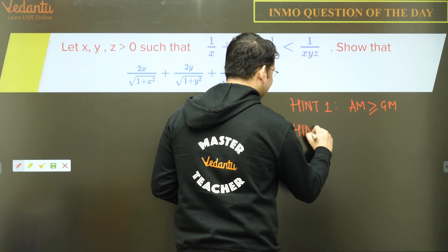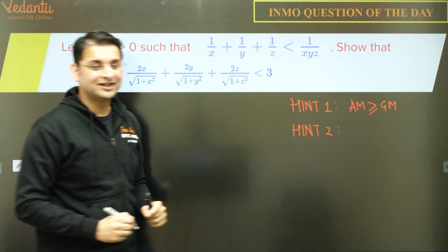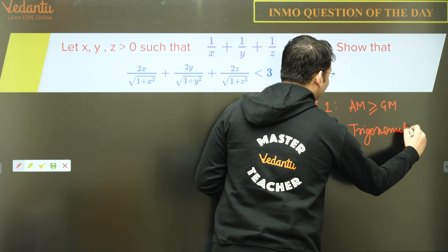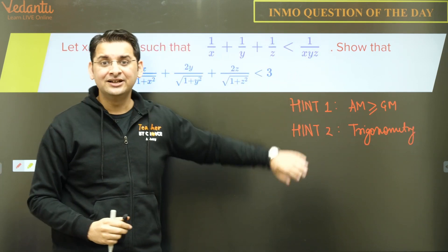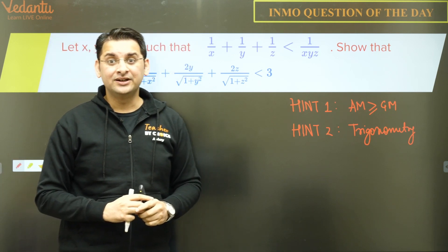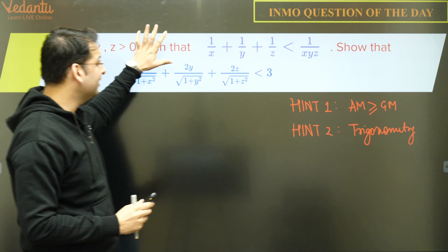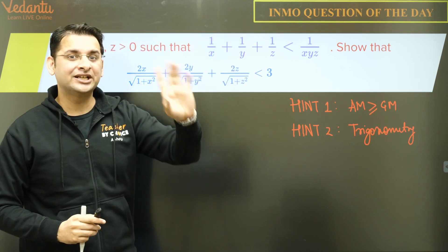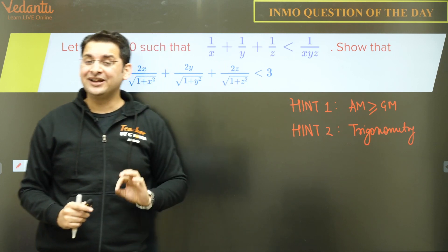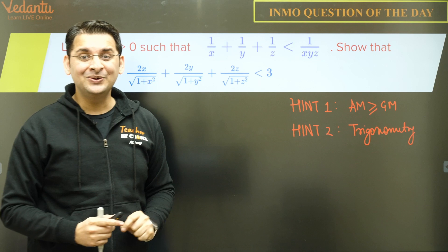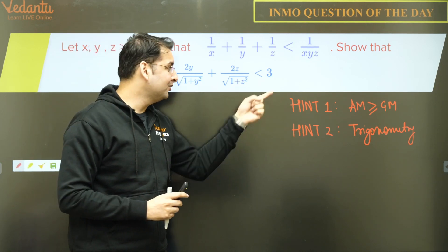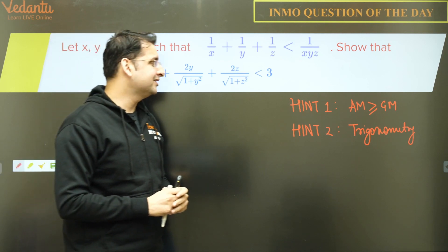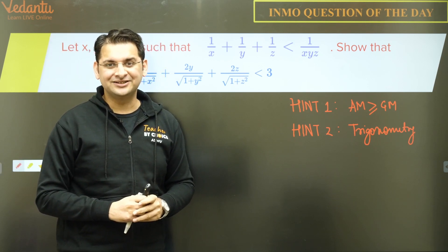For the second approach, the hint is trigonometry. We'll be solving this question using these two approaches — two different solutions. The first involves AM-GM and the second involves trigonometry. With trigonometry, many of you may have already guessed that 1/x + 1/y + 1/z relates to 1/(xyz). Try and do this question with these two hints, using both methods if possible. You can pause the video here and attempt the question.